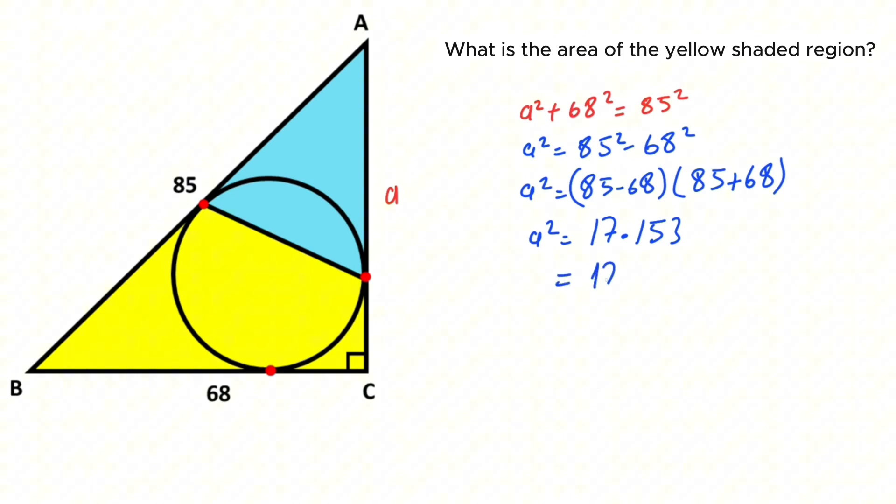So 17 times 153 equals 17 times 9 times 17, which is 17 squared times 3 squared. It means a squared equals 51 squared. Let's take the square root of both sides of the equation. We get a as 51. That's right, here a is 51.